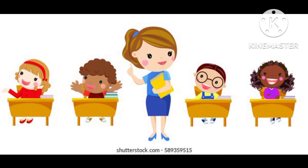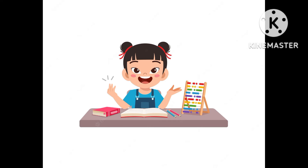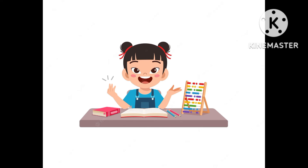'Ita, tell me about the traffic signals.' 'Ma'am, the traffic signals are red, amber, and green. The red signal means stop. The amber signal asks to wait, and the green signal tells us to go.'